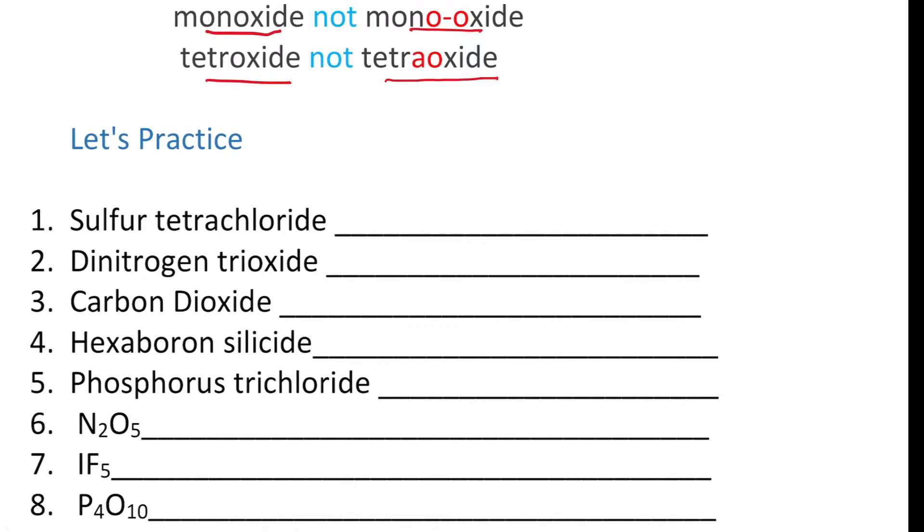We're going to just jump right in with our prefixes and we're going to practice. Sulfur tetrachloride, so it's going to be sulfur and then chlorine with a four: sulfur tetrachloride. You don't have to balance charges, you don't have to reduce down to the lowest whole number, these are covalent compounds, there are no ions formed because the elements are sharing electrons. How about this one? Dinitrogen trioxide. How about this one? Carbon dioxide. Notice they don't call this monocarbon because you never start with mono. How about this one? Hexaboron silicide. Oh, Si, not S, hexaboron silicide. How about this one? Phosphorus trichloride.